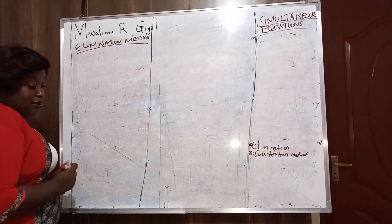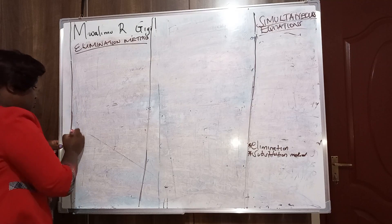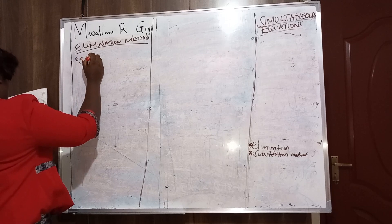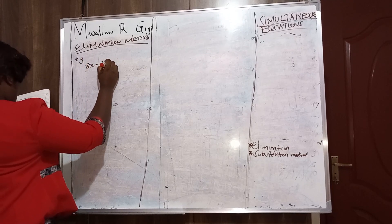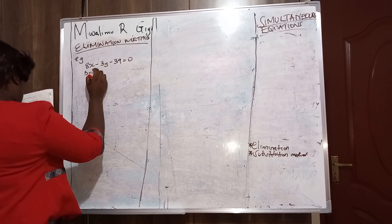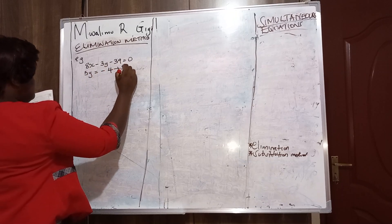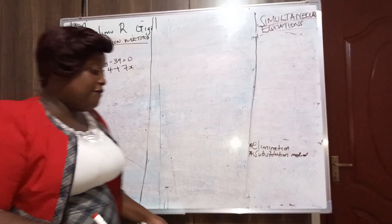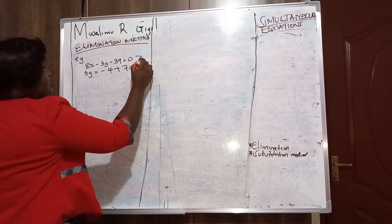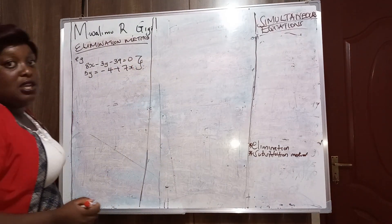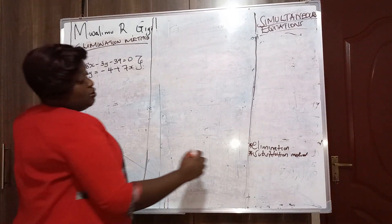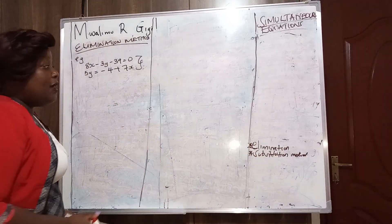We are solving a simultaneous equation using the elimination method. For example, we have two equations: 8x minus 3y minus 39 equals 0, and 5y equals negative 4 plus 7x. We have two methods of solving a simultaneous equation: the elimination method and the substitution method.